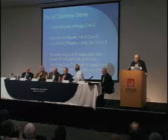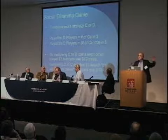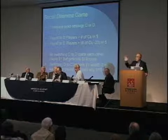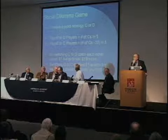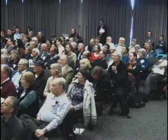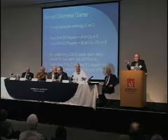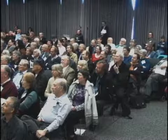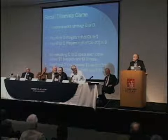So with about 300 people in the room and two-thirds choosing D, that means all the Cs would get around $100 and all the Ds would get around $80. Now let's vote again with eyes open.